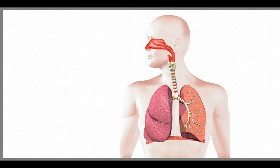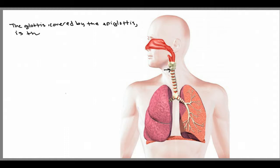Now I'm going to talk about some associated structures and functions. This is the trachea. The opening to the trachea is called the glottis, which is covered by the epiglottis. The epiglottis is a leaf-shaped structure which functions to prevent material from entering the trachea.